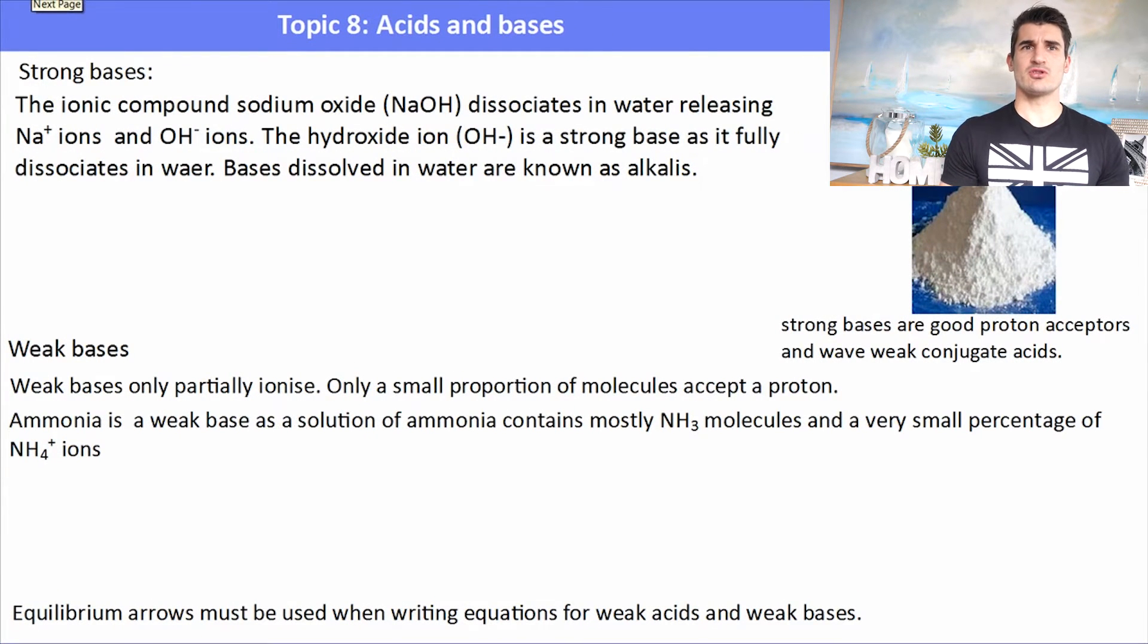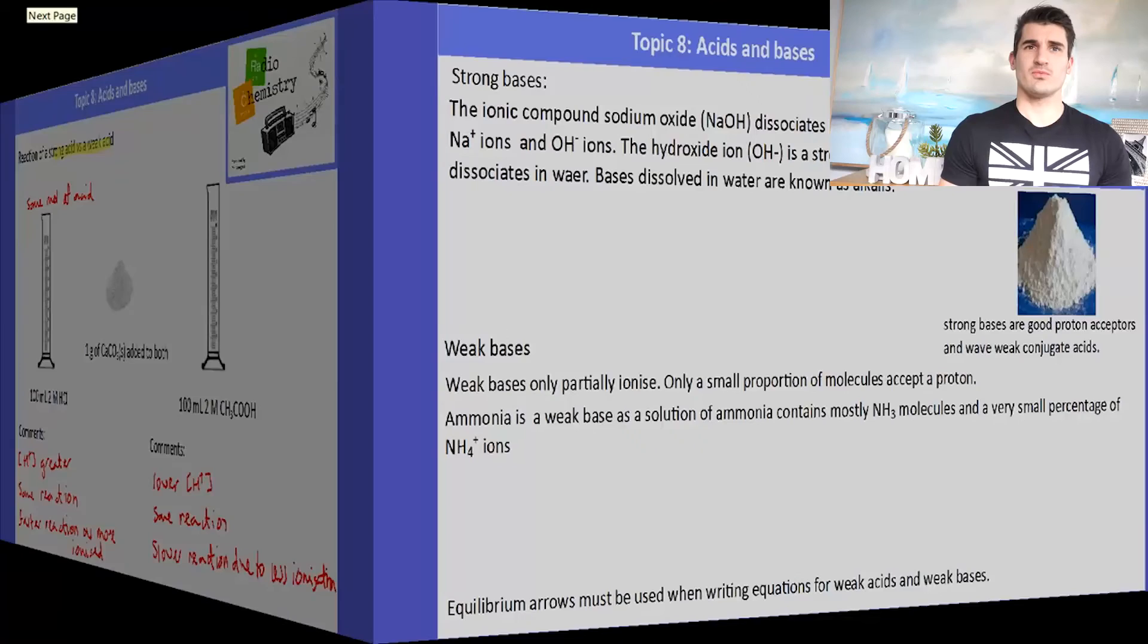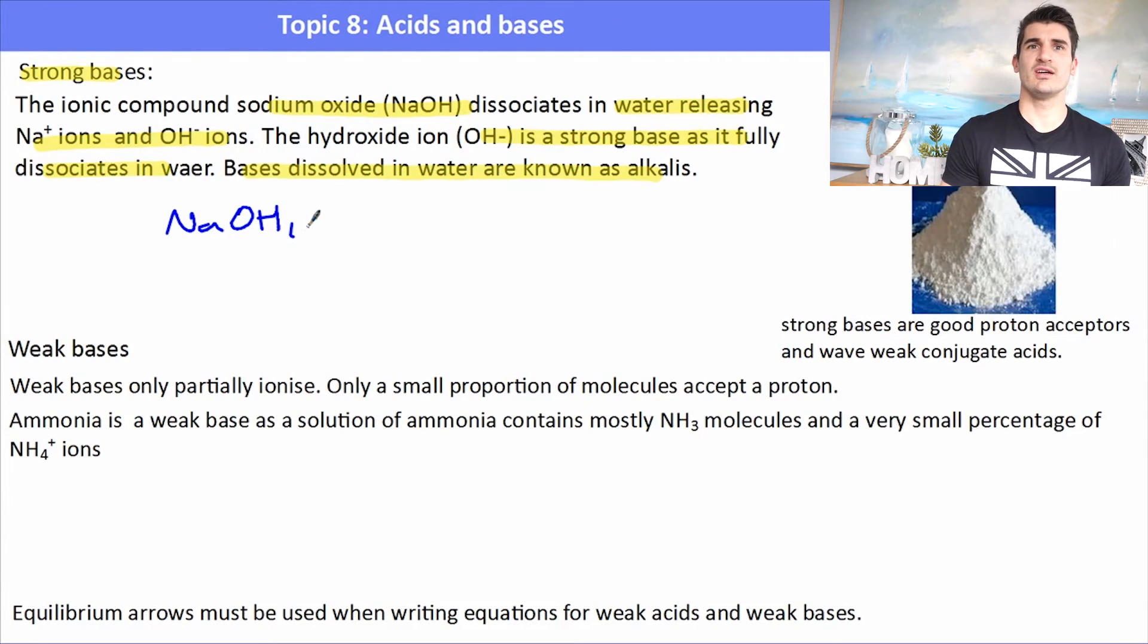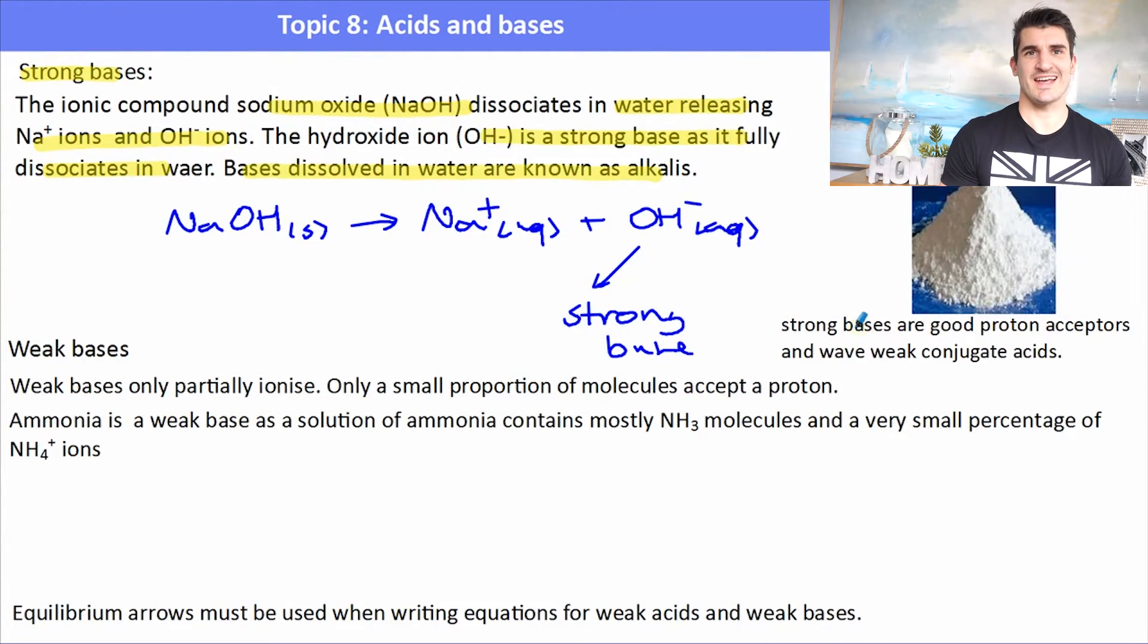Moving away from acids now and talking about bases. Bases, we can apply the same rules. For a strong base, we need to have a base that is good at accepting protons. For example, the ionic compound sodium hydroxide releases sodium ions and hydroxide ions when it dissociates in water. OH- is a base and it's known as an alkali. So NaOH will dissociate in water to form Na+ ions and OH- ions. OH- ions are a strong base. That means they will fully accept protons. Strong bases are good proton acceptors and they have weak conjugate acids.